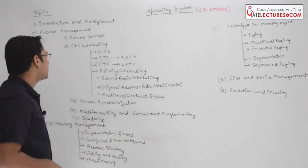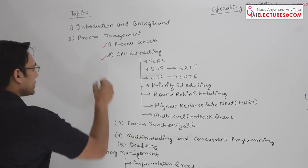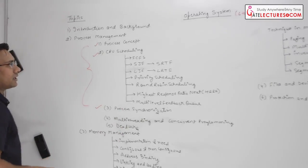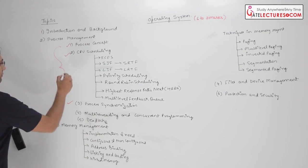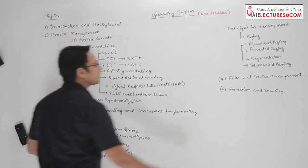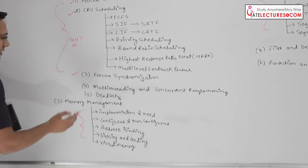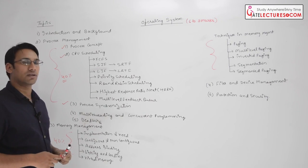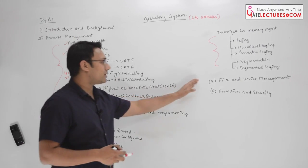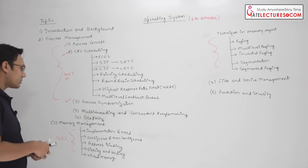In the operating system subject, the process concept, CPU scheduling, and process synchronization are the most important portions. Out of 100% of operating system content, approximately 40% of questions will come from the process concept and CPU scheduling section, and another 40% from process synchronization and memory management. These two sections together cover about 80% of the syllabus. Most theory questions come from the introduction, file management, and protection and security. Deadlock is also a very important topic from which you can expect some questions.